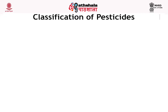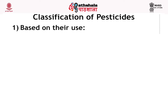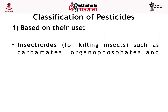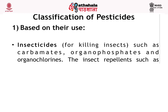First we are starting with the classification of pesticide. Classification of pesticide is done on the basis of their use and on the basis of their chemical constituent. Based on their use, there is a large variety of pesticides designed to kill specific pests. Those most widely used are listed below. First, insecticides such as carbamates, organophosphates and organochlorines, they are used to kill insects.